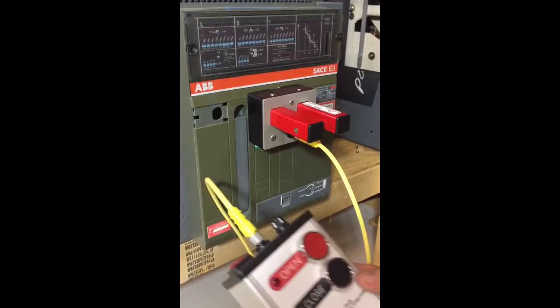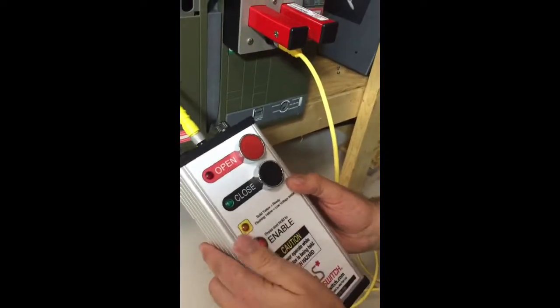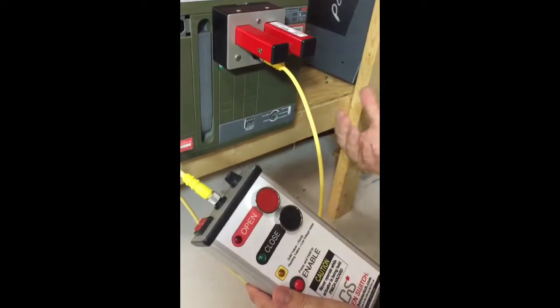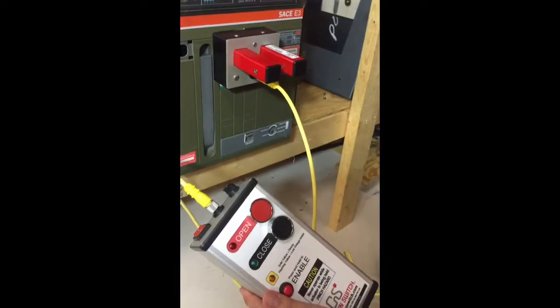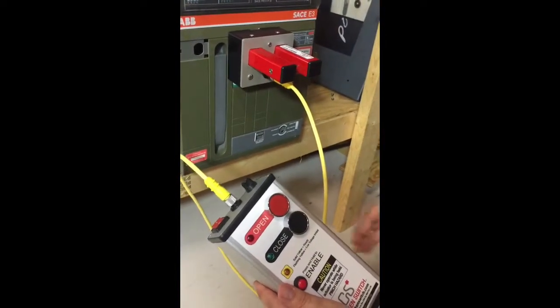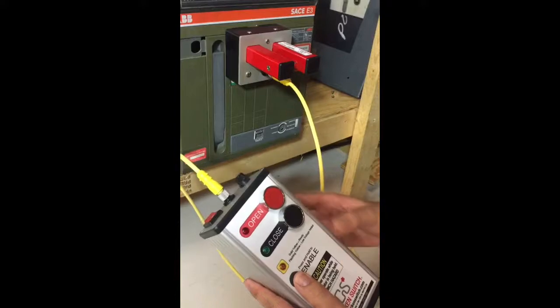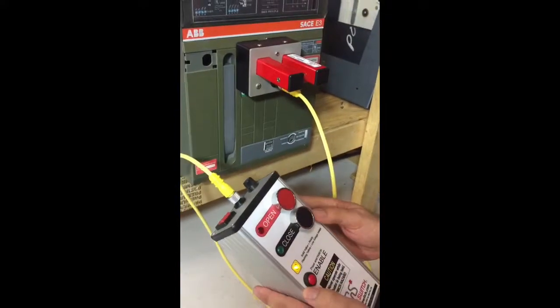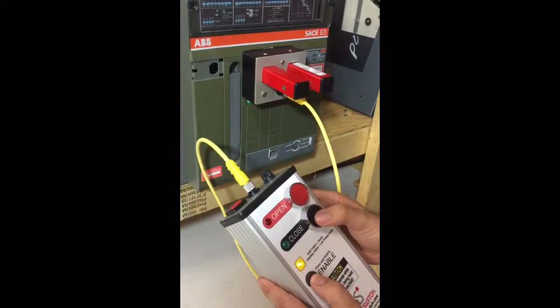I'll grab the remote and I will be positioned ideally 30 or 50 feet away depending on how far I need to be due to my arc flash requirements. And I'll hold the enable button and close the breaker.